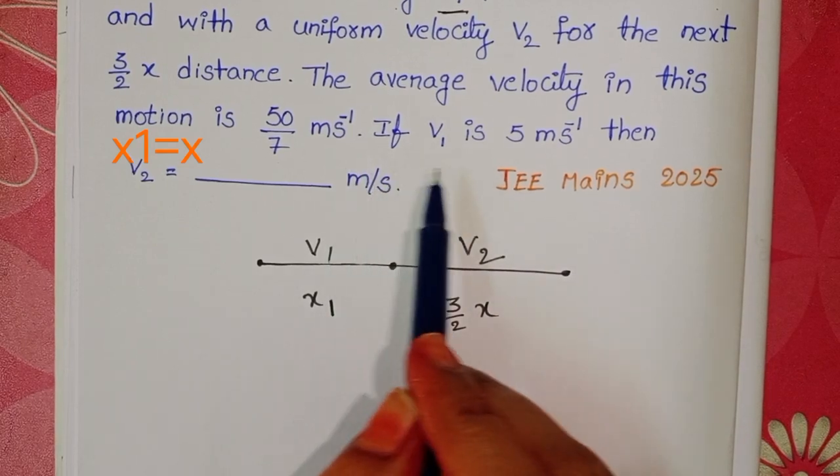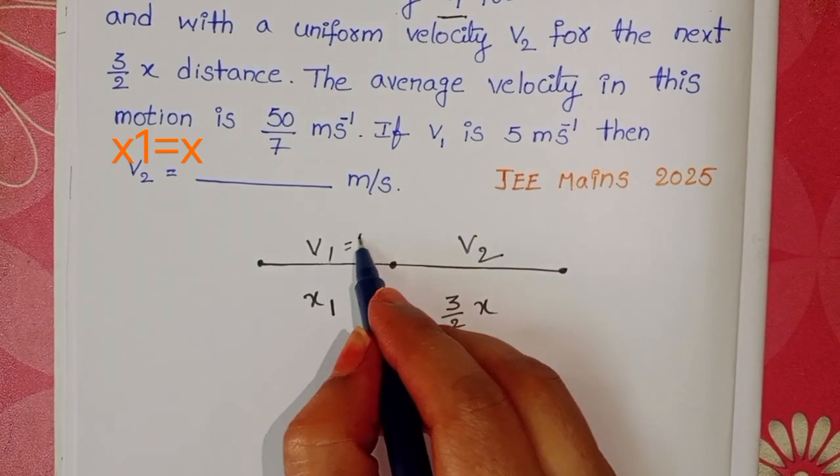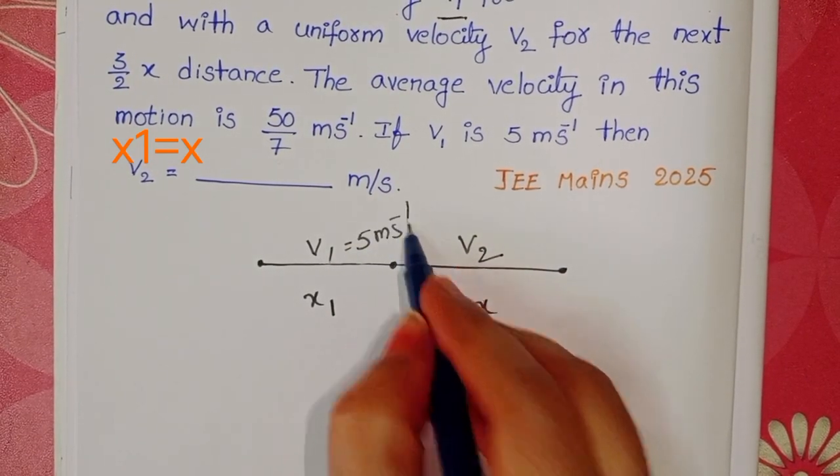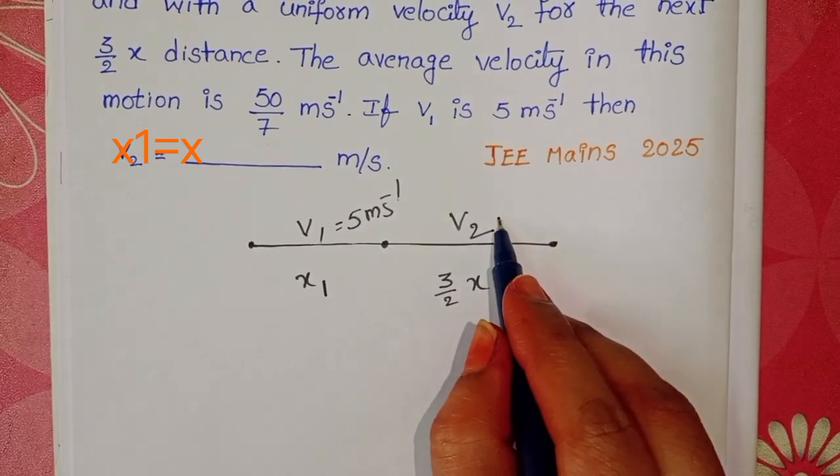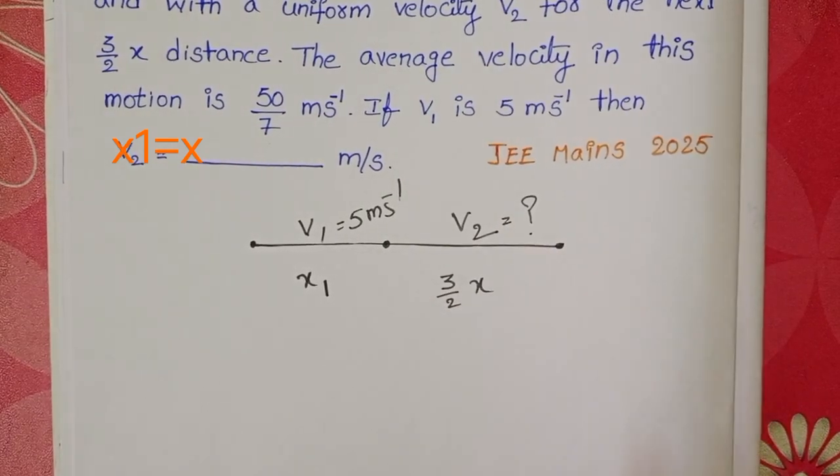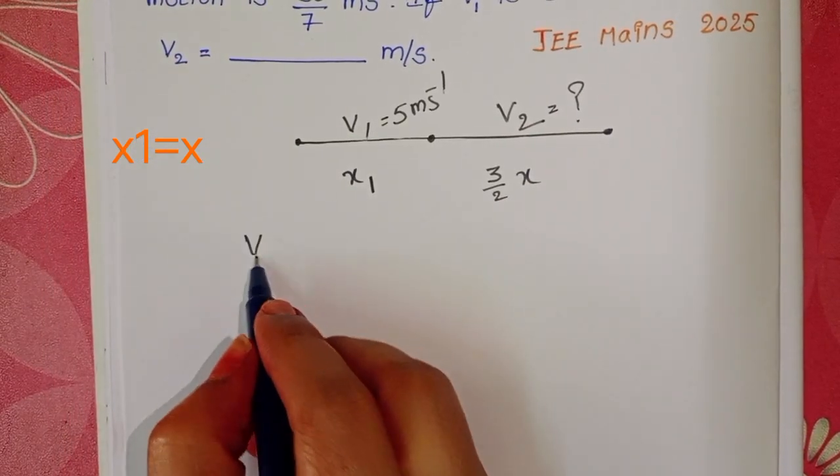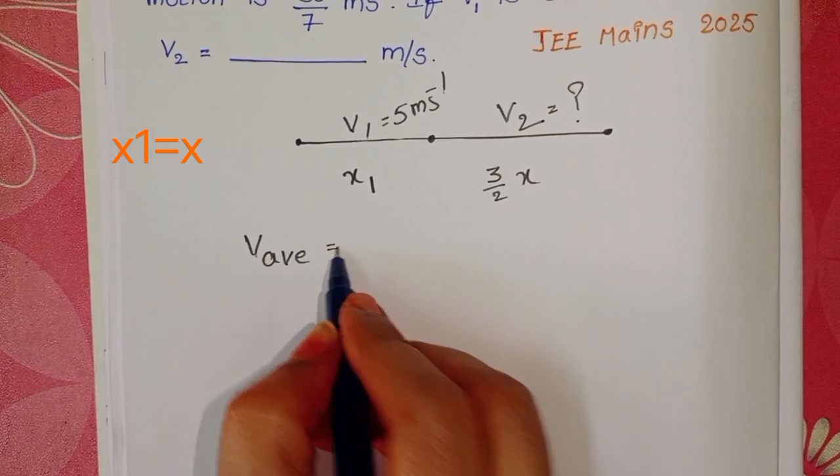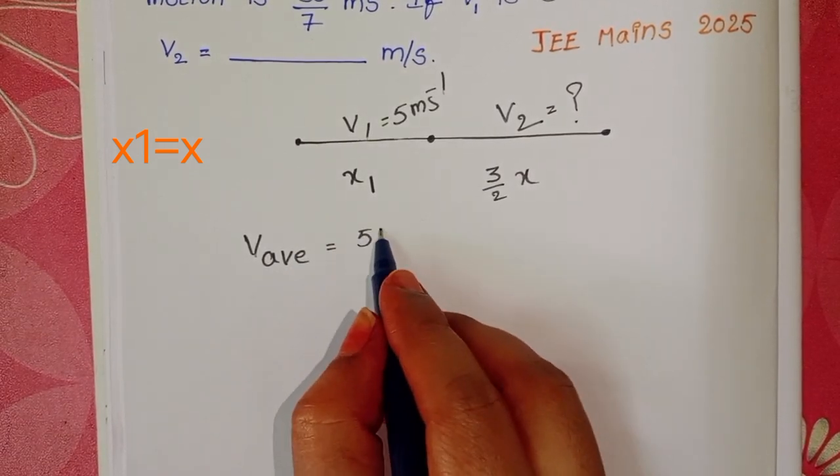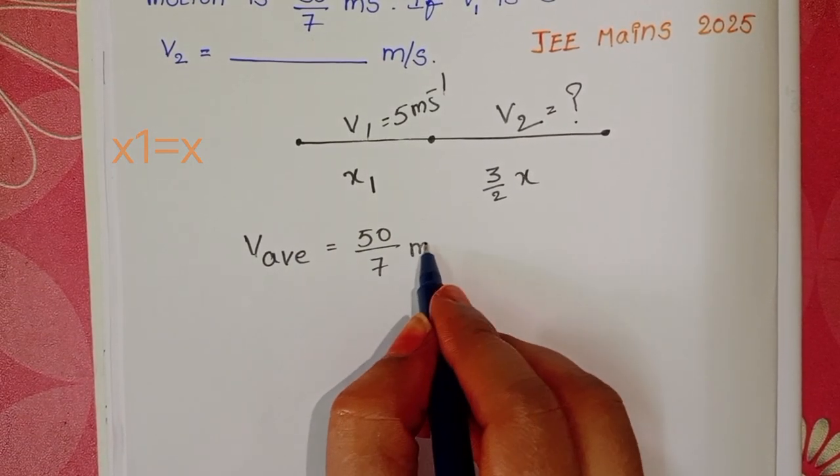Here we know the value of v1. v1 is 5 meter per second. We have to calculate the value of v2, and we also know average velocity. v average equals 50 by 7 meter per second.